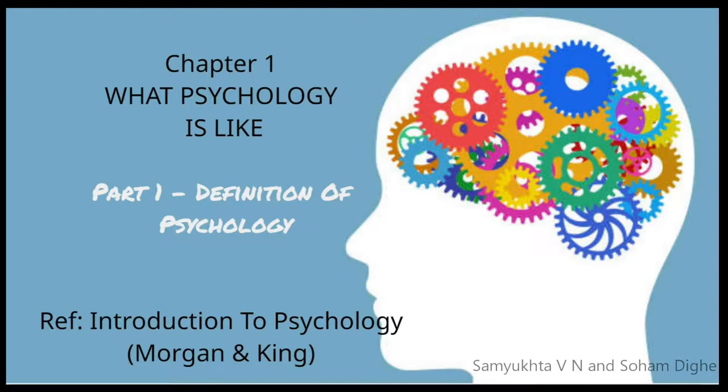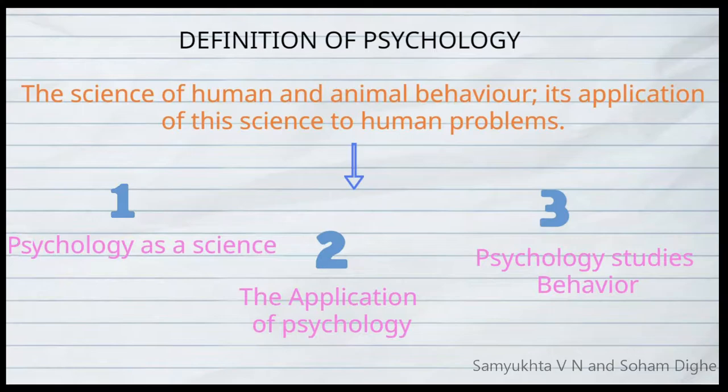Today we will discuss the definition of psychology, Chapter 1, from the book 'Introduction to Psychology' by Morgan and King. The definition of psychology is: the science of human and animal behavior, and its application to human problems. This definition has three main parts: psychology as a science, the application of psychology, and psychology studies behavior.